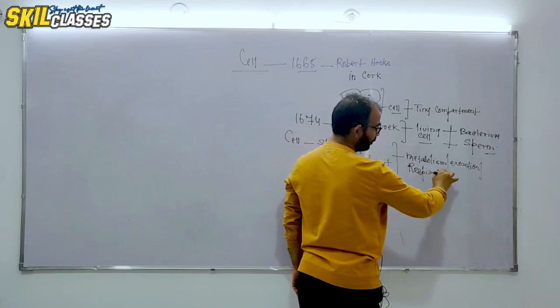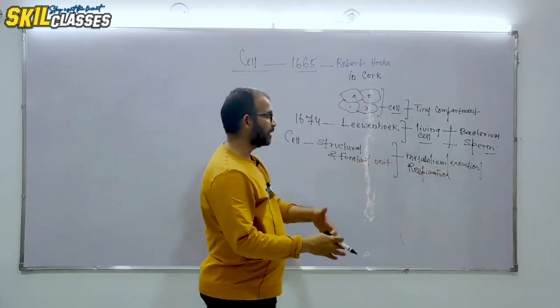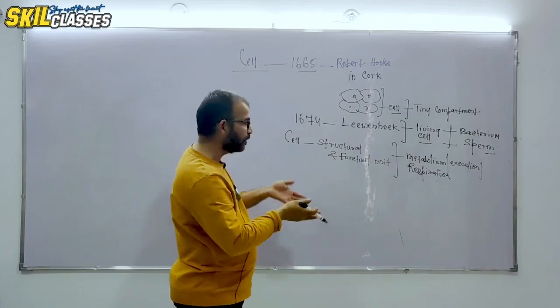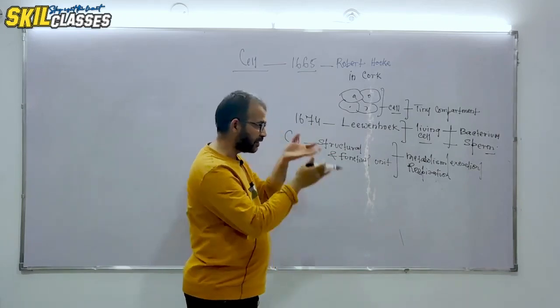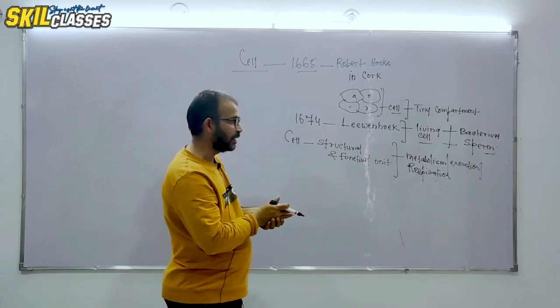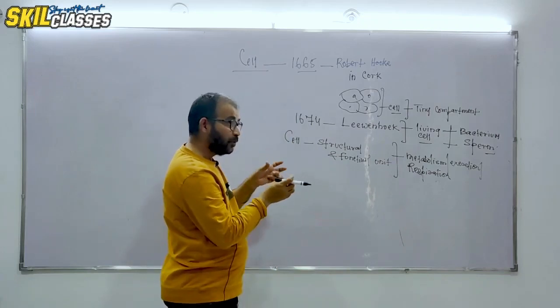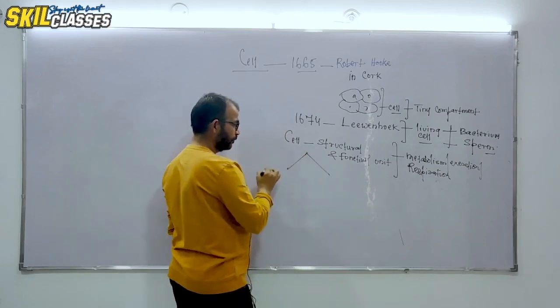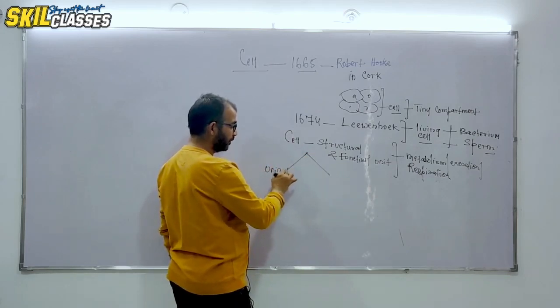Any multicellular organism is formed of many cells. A human is made of hundred trillion cells, 70 kg human being. A unicellular organism has a single cell which can perform all functions.